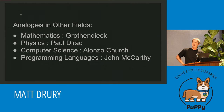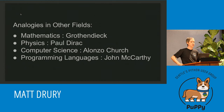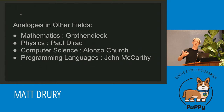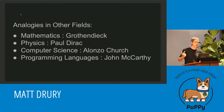Some analogies of his stature: Grothendieck's stature in mathematics is comparable to Paul Dirac in physics — a nice callback to the first talk, because Paul Dirac created the Dirac equation, the quantum mechanical equation for the electron. In computer science, Alonzo Church created the lambda calculus. And in programming languages, John McCarthy created — Lisp?